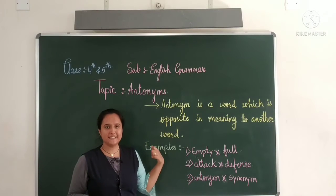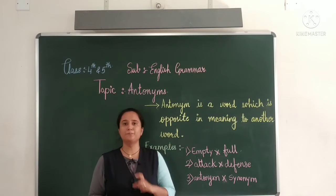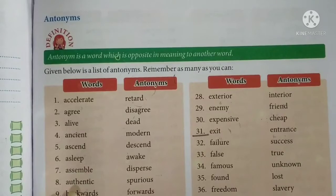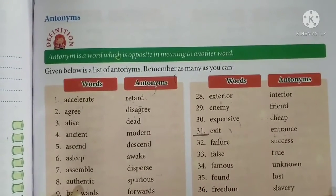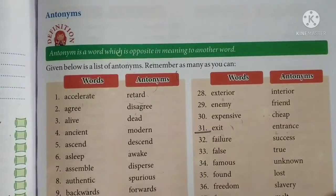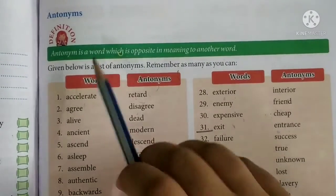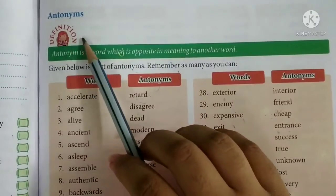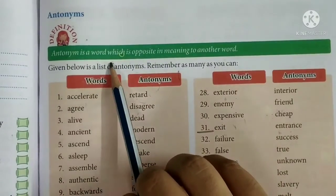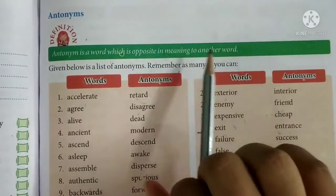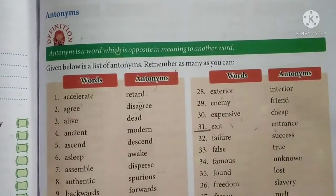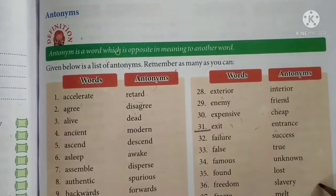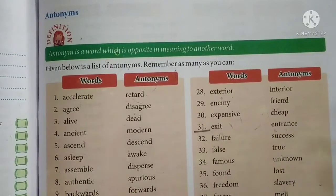Okay students, let's study Antonyms from our book. Open your grammar textbook to page number 93. Our today's topic is Antonyms. Antonyms is a word which is opposite in meaning to another word. Jo word humain diya hai, uska opposite meaning hona chahiye — agar hum doosra word likhein, uska meaning usse ulta hona chahiye.